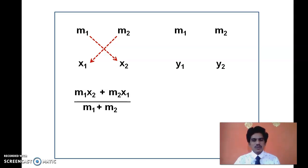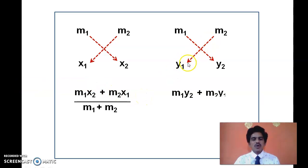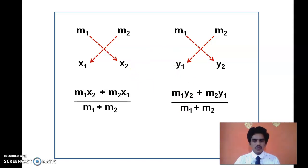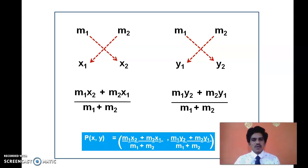So the x-coordinate is (M1·x2 + M2·x1) / (M1 + M2). You can do the same cross multiplication for y: M1·y2 + M2·y1, again divided by M1 + M2. This is the shortcut to remember the Section Formula, and this is the formula we will now apply.